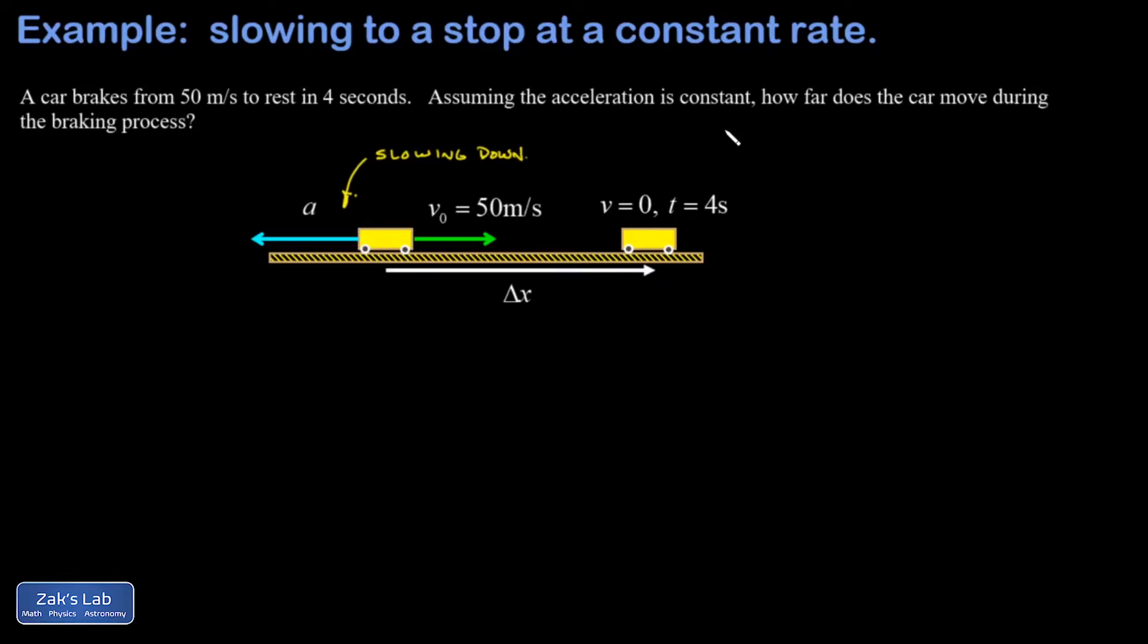I want to know how far the car moves during the braking process. What we know is how long it takes to actually stop, so just making a little list of what I know and what I don't know. My initial velocity is plus 50 meters per second. My final velocity, if I'm braking to a stop, is zero meters per second.